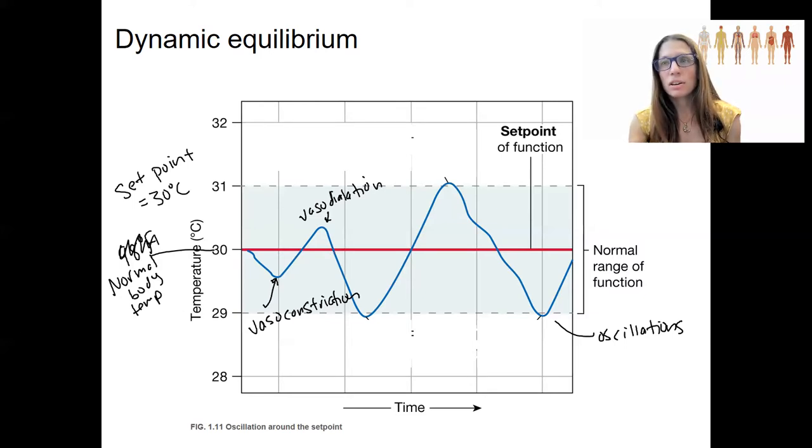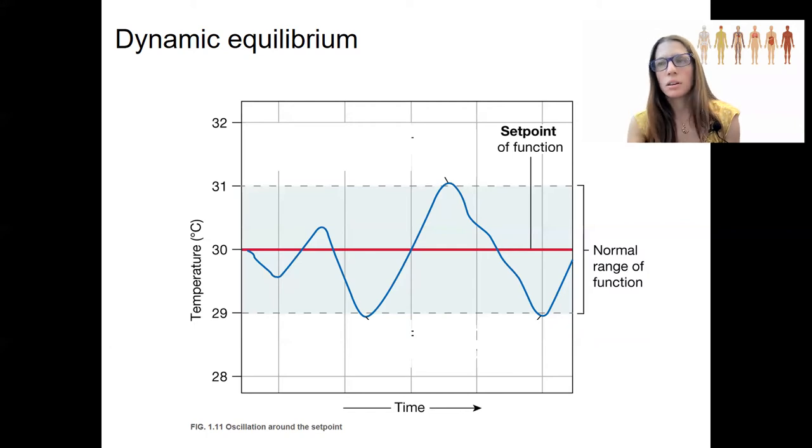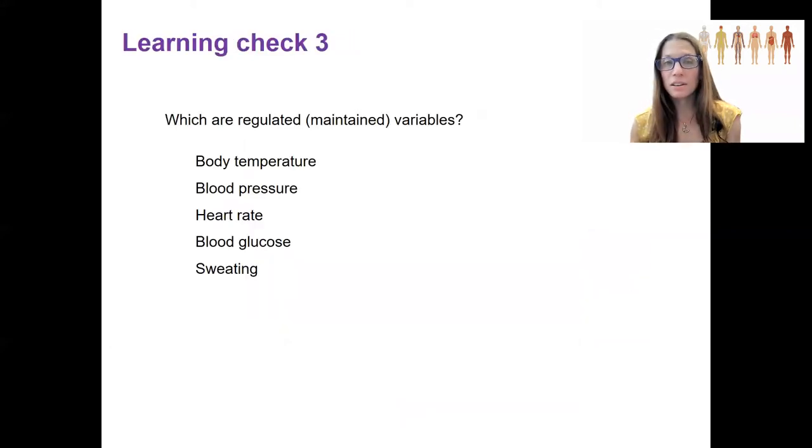Okay, I think we're ready for a learning check here. So, which of these are regulated variables? Just a reminder, by regulated, that means maintained. Okay, not those ones. The rest are. So, body temperature, blood pressure, and blood glucose. Those aren't all the regulated variables, but they're the only ones on this list. Heart rate is designed to dynamically change, dynamically meaning quickly and large changes in order to maintain blood pressure. Sweating is a response to changes in body temperature, in order to maintain body temperature. It is not itself maintained.